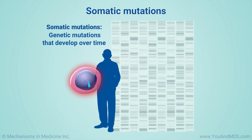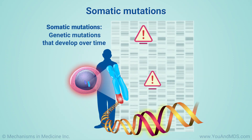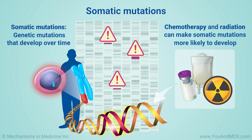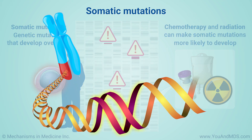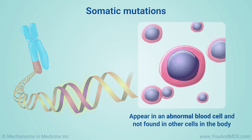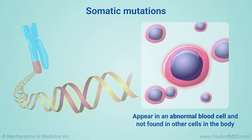The genetic mutations that develop in our cells over time are called somatic mutations. They are an important cause of all forms of MDS. Chemotherapy and radiation can make somatic mutations more likely to develop. A somatic mutation is not a mutation that a person with MDS was born with. It is a mutation that appeared in an abnormal blood cell and is not found in other cells in the body.